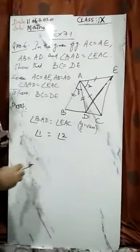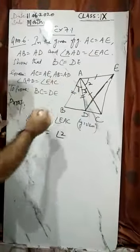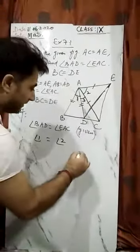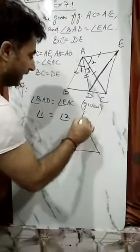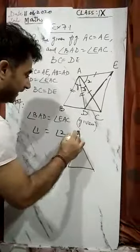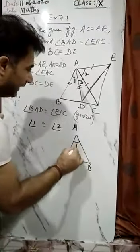So if I consider this angle as angle 3, then see if I have BAD, this triangle, this is AB, then this is your angle 1.